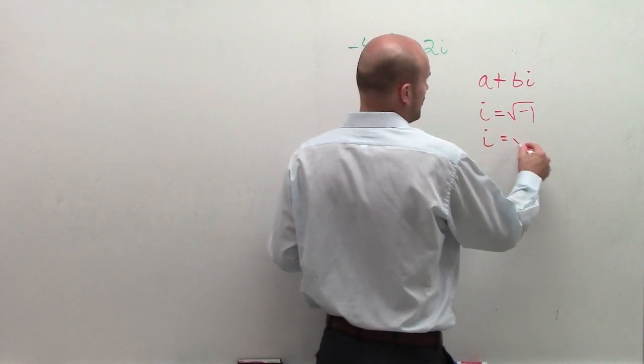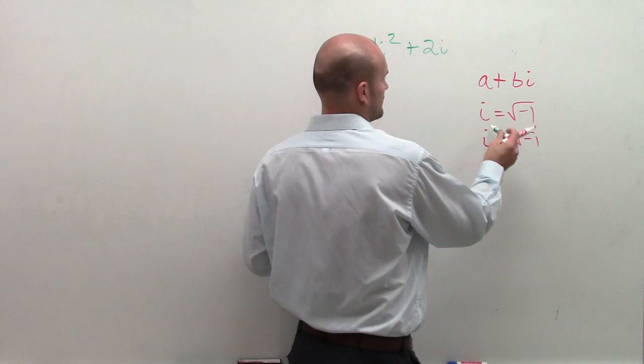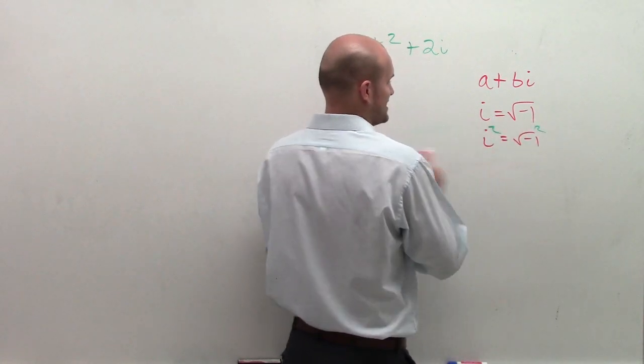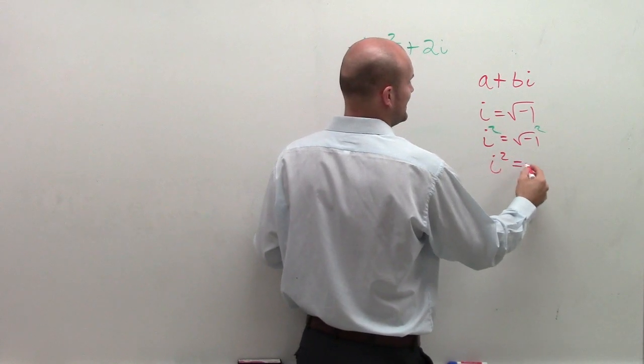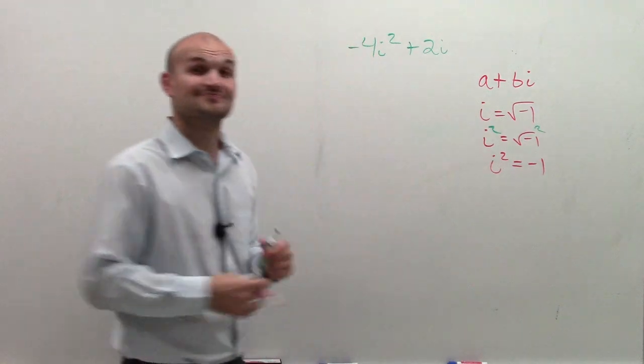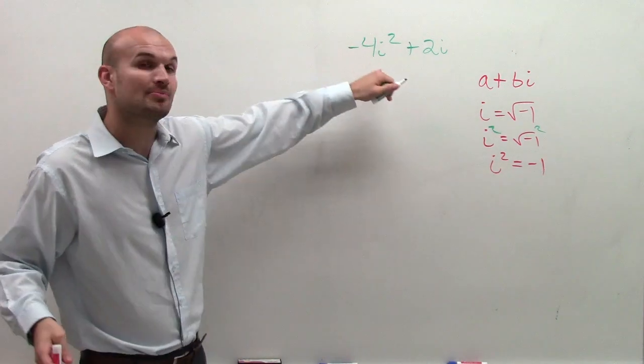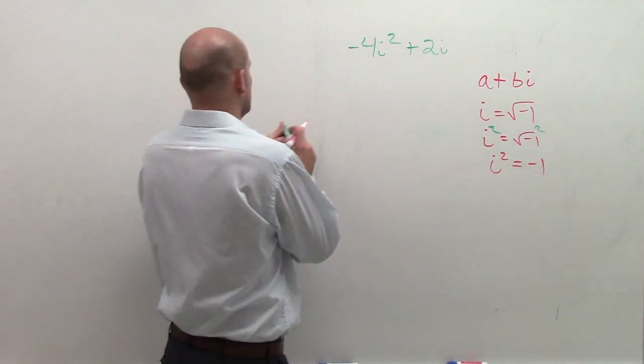Well, if I'm going to square both sides of that, so if I go and square both sides, I'm left with i squared equals negative 1. So guess what? I can actually replace i squared with negative 1.